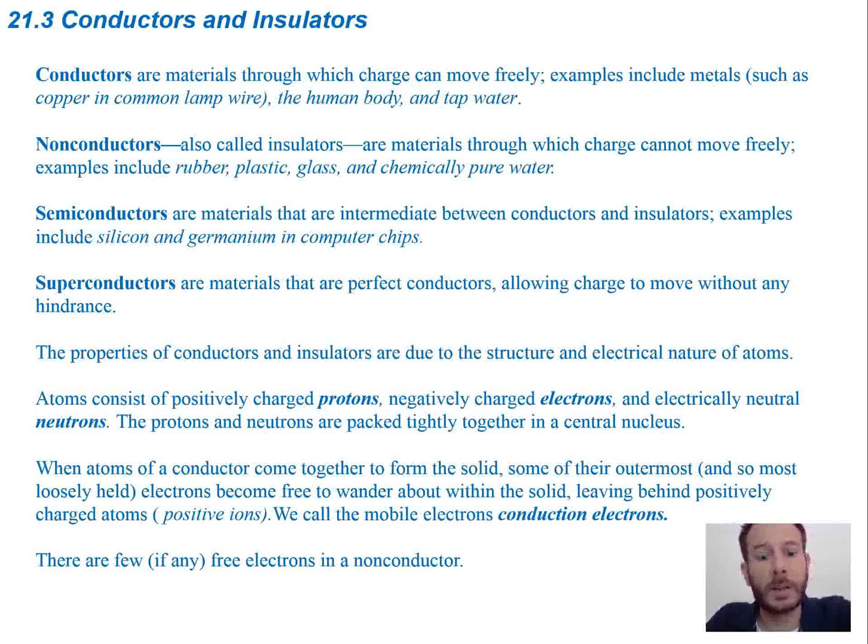If we look down at the next one, non-conductors, they're going to be things like rubber, plastic, glass, or pure water, and they're not going to allow the flow of electrons. Now we normally call non-conductors insulators, as you can see here. Semiconductors are some kind of intermediate in between conductors and insulators. Common applications are computer chips. And then superconductors are materials that allow free-flowing of electrons, so there's no resistance. Superconductors are generally very cold, well below zero Celsius in the low Kelvins.